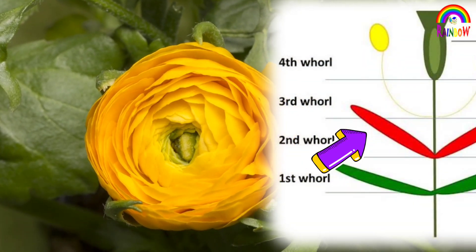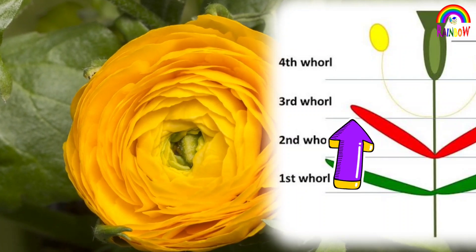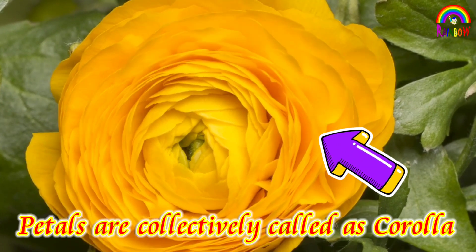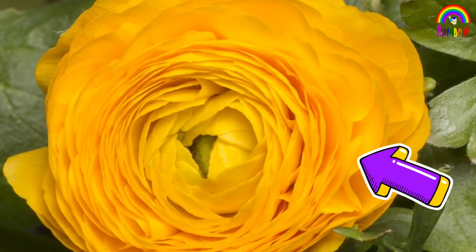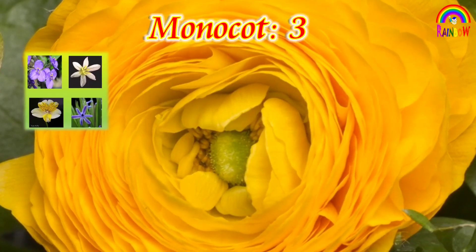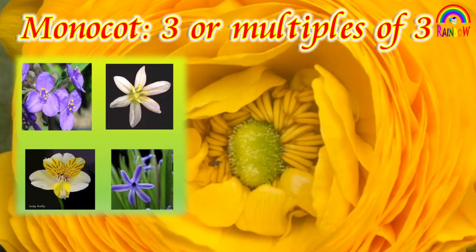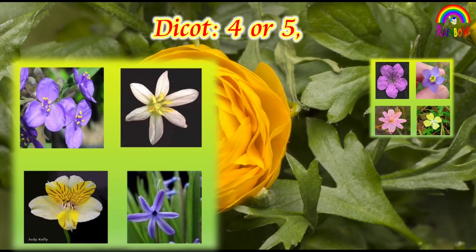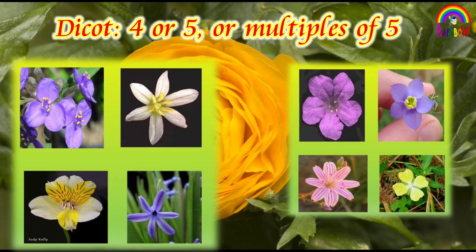The second whorl is of petals, usually brightly colored. These are collectively called as corolla. The number of petals and sepals varies depending on whether the plant is a monocot or dicot. In monocots, petals are usually three in number or multiples of three. In dicots, the number of petals is four or five or multiples of five.